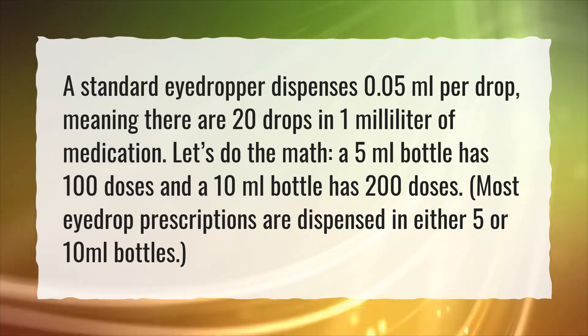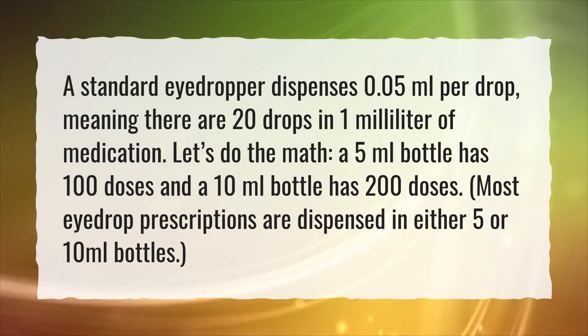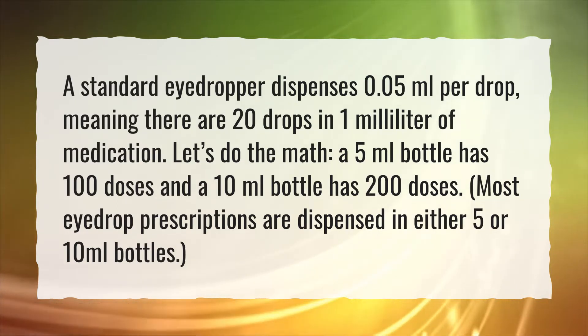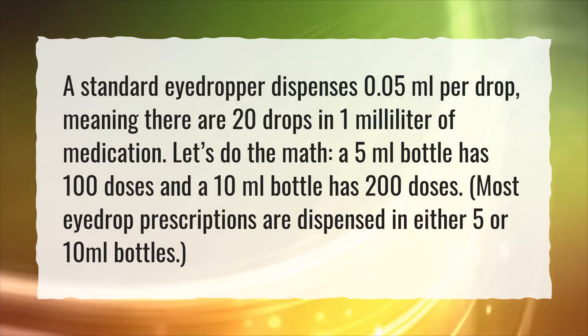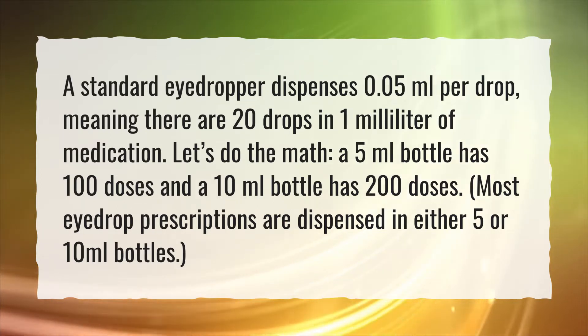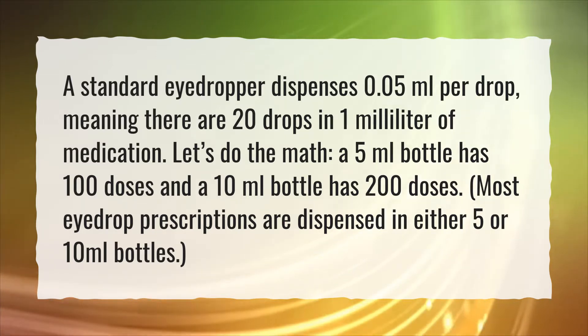A 5 ml bottle has 100 doses and a 10 ml bottle has 200 doses. Most eyedropper prescriptions are dispensed in either 5 or 10 ml bottles.